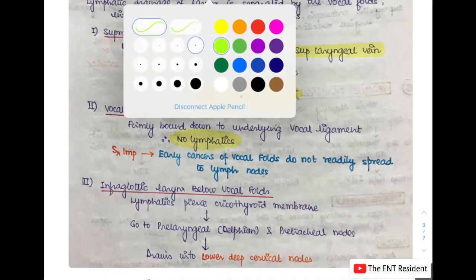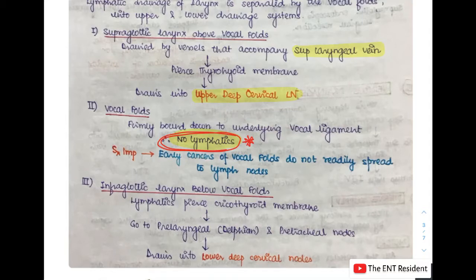This is very important to know clinically because early cancers of the vocal fold do not readily spread to the lymph nodes, due to the exact fact that the vocal folds have no lymphatic drainage. The infraglottic larynx, which lies below the level of the vocal folds, has lymphatics that pierce the cricothyroid membrane, go to the pre-laryngeal nodes — also known as the delphian nodes — and the pre-tracheal nodes, and ultimately drain into the lower deep cervical nodes.